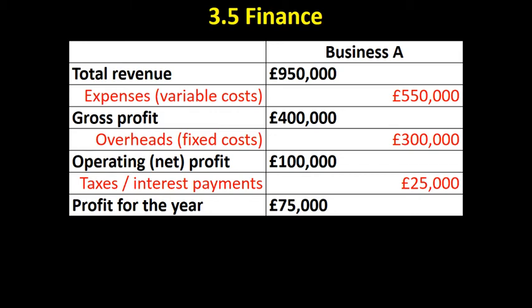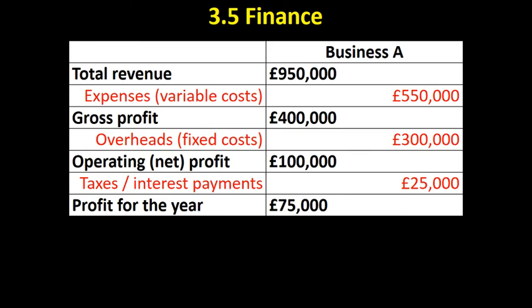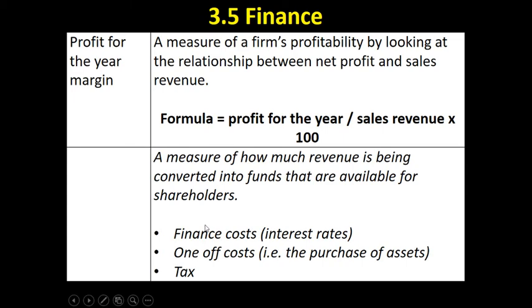Profit for the year can also include one-off costs — for example, if a business has sold an asset and received a large sum of money from that sale, that's not going to happen again. We don't particularly want to include that in our calculation of how efficient the business is, because that's not good quality profit. That's why operating profit margin is often a better measure of efficiency. Nevertheless, the profit for the year margin is calculated the same way: profit for the year divided by sales revenue times 100. It measures how much revenue has been converted into funds available for shareholders.